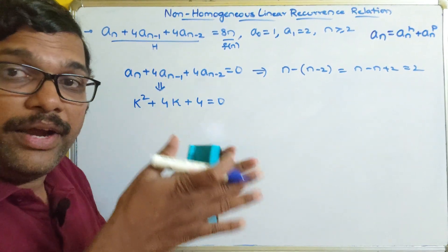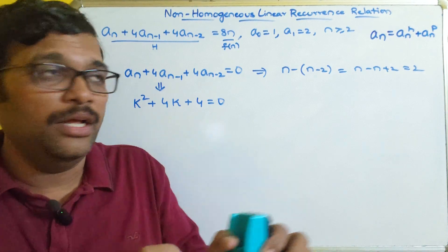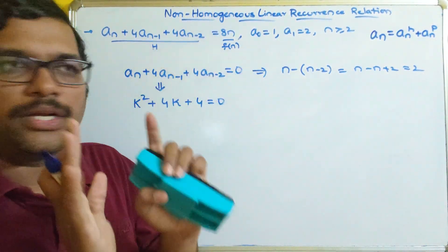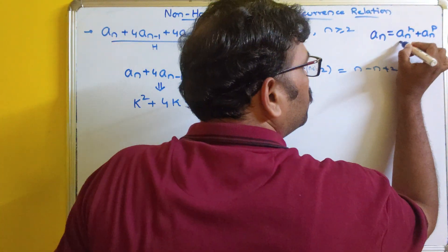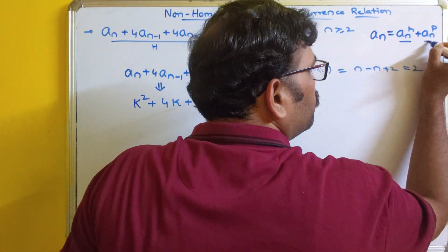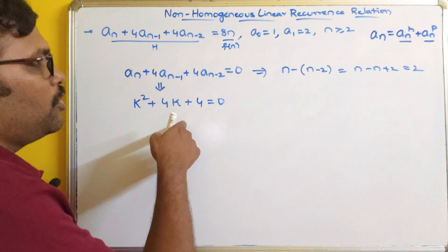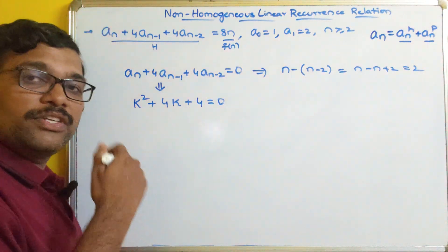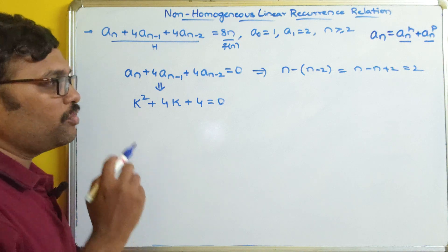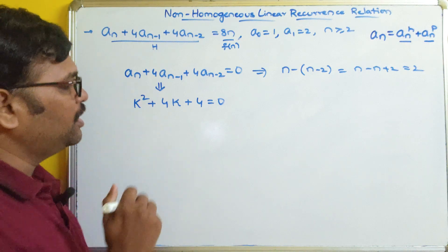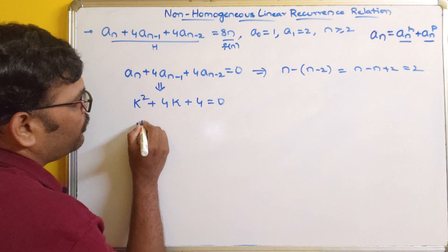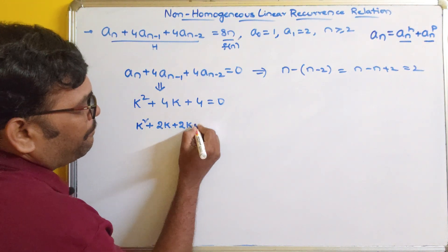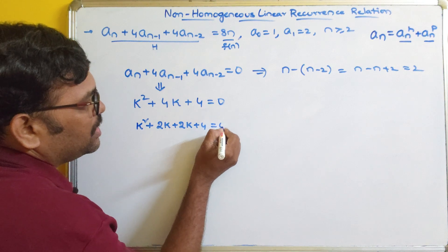We are dividing the complete non-homogeneous recurrence relation into two parts: one is the homogeneous, another is the function. We need to find the general solution for the homogeneous and the general solution for the particular solution. From the auxiliary equation we need to find the roots. This is a quadratic equation so we will have two roots. We write k² + 2k + 2k + 4 = 0.